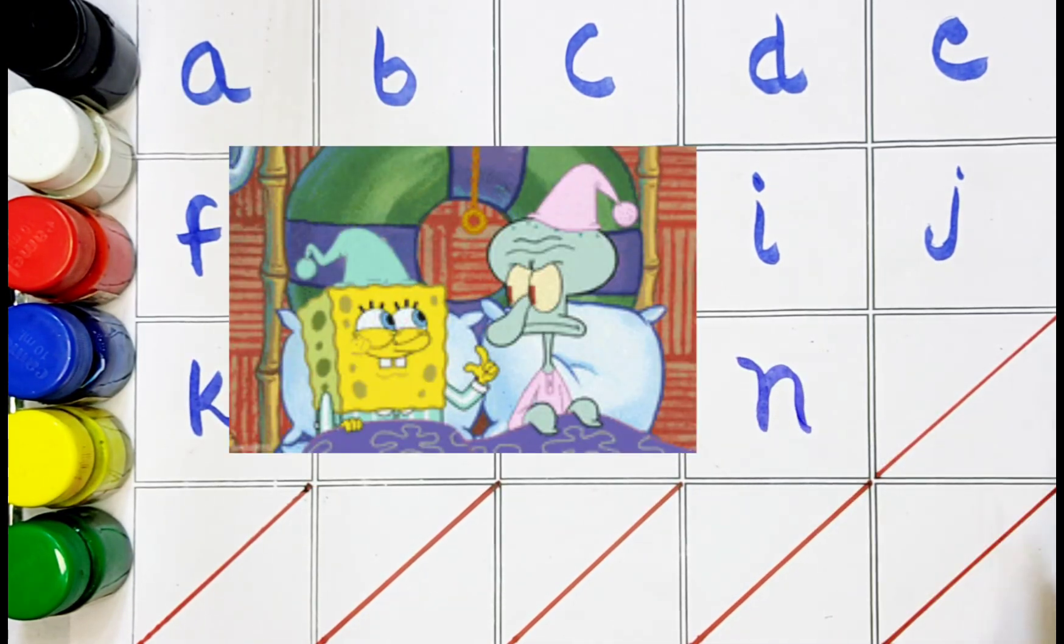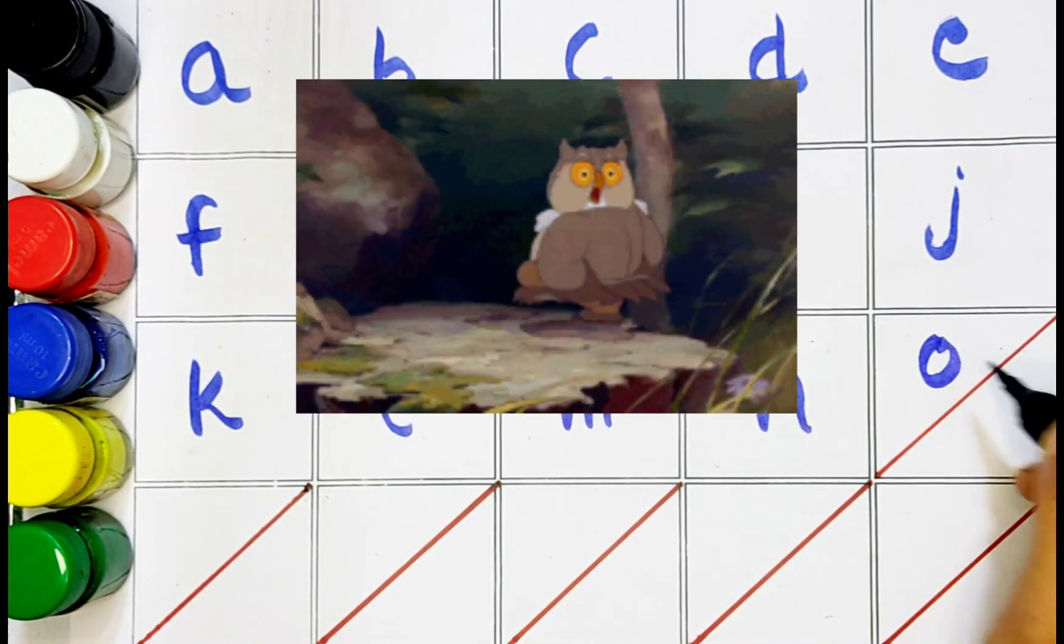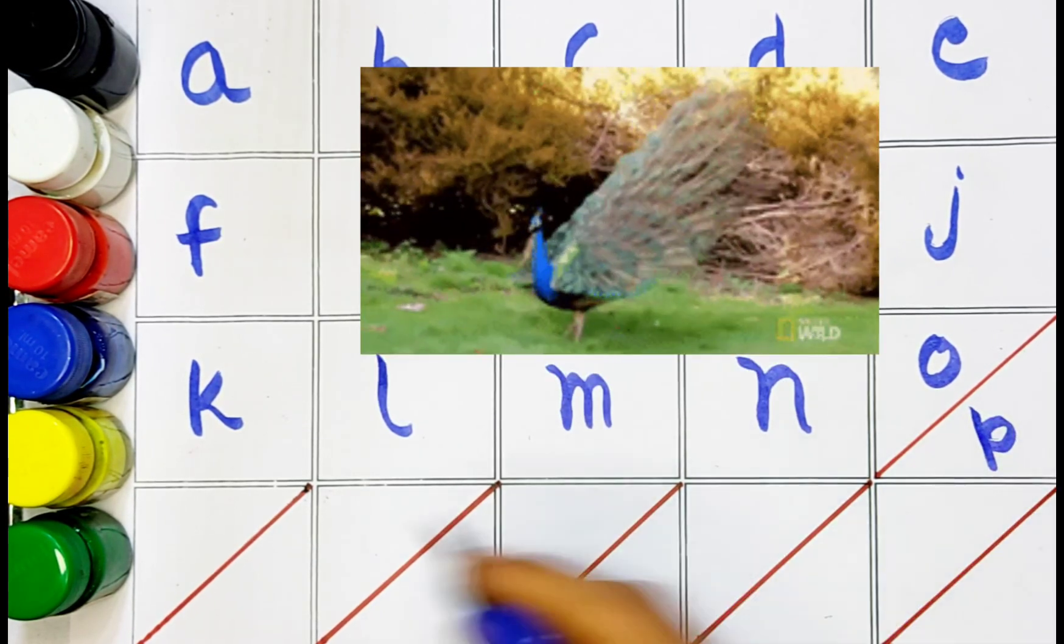N. N for nose. O. O for owl. P. P for peacock.